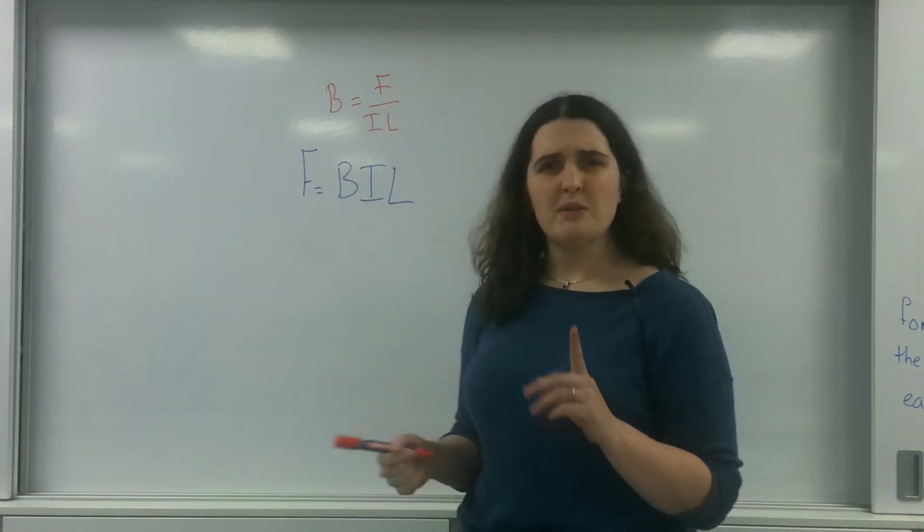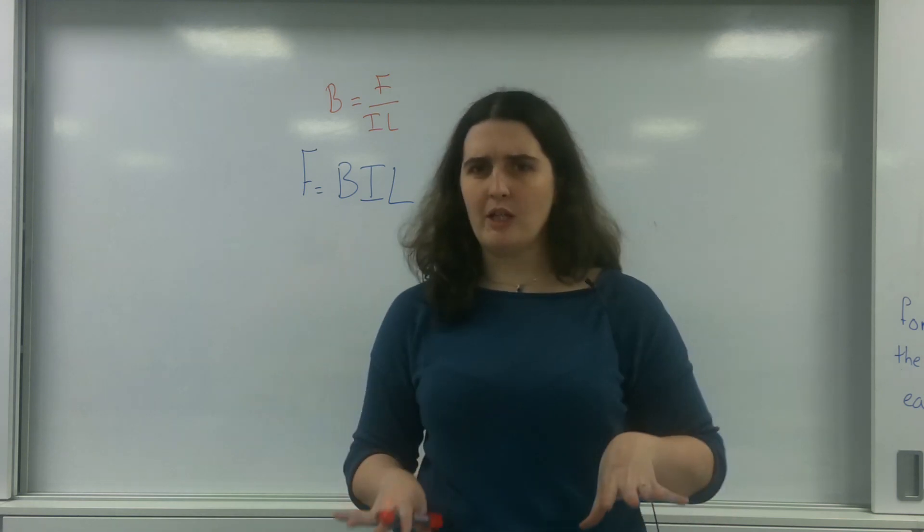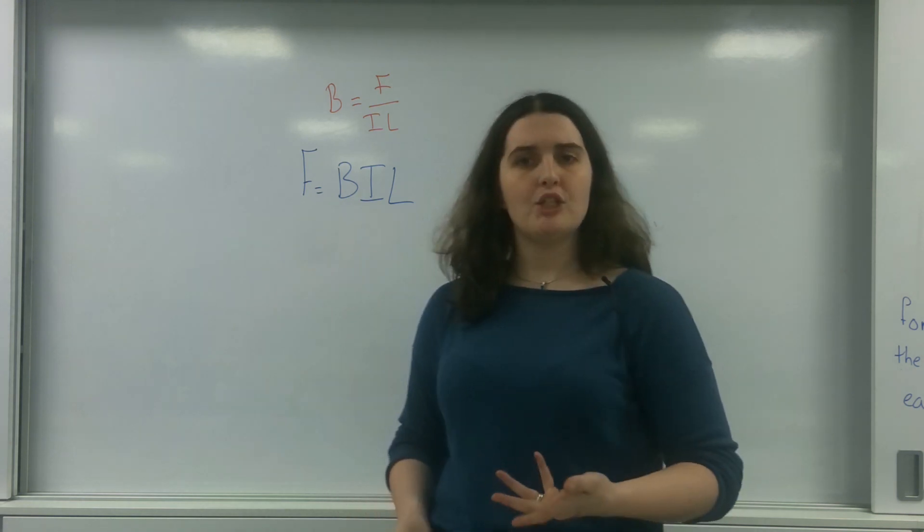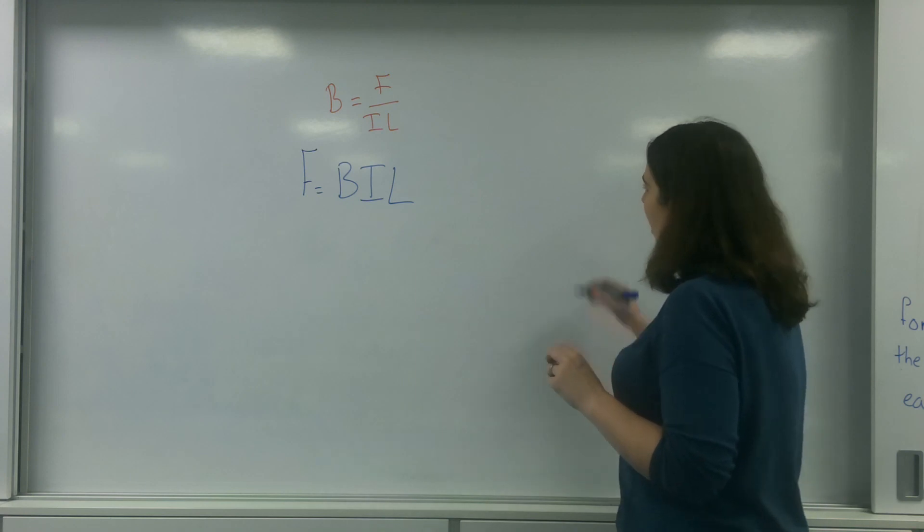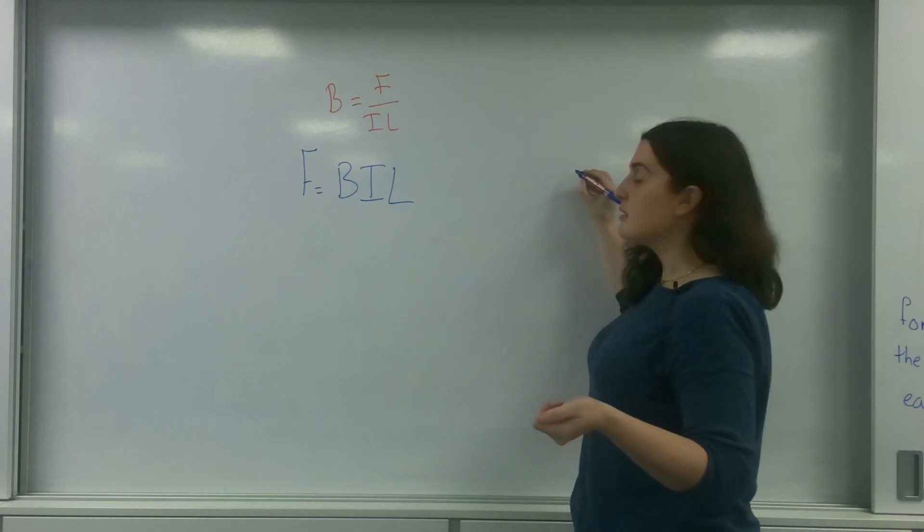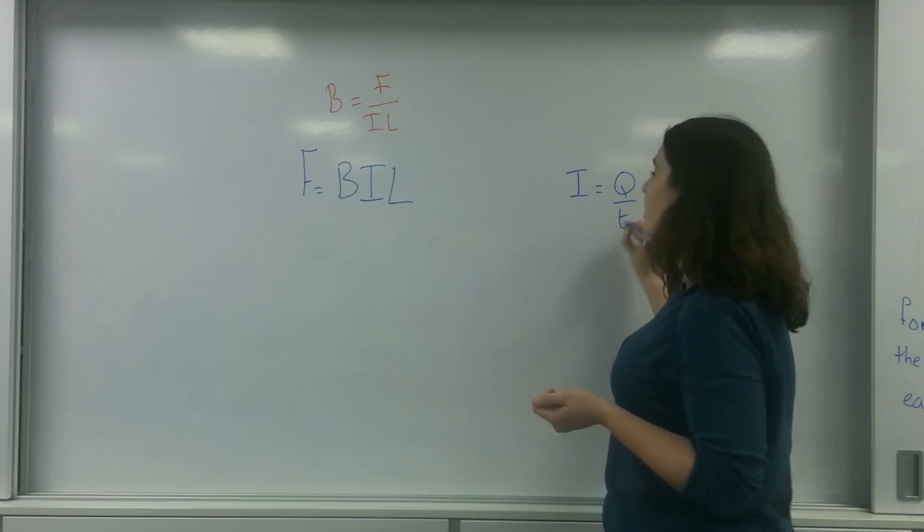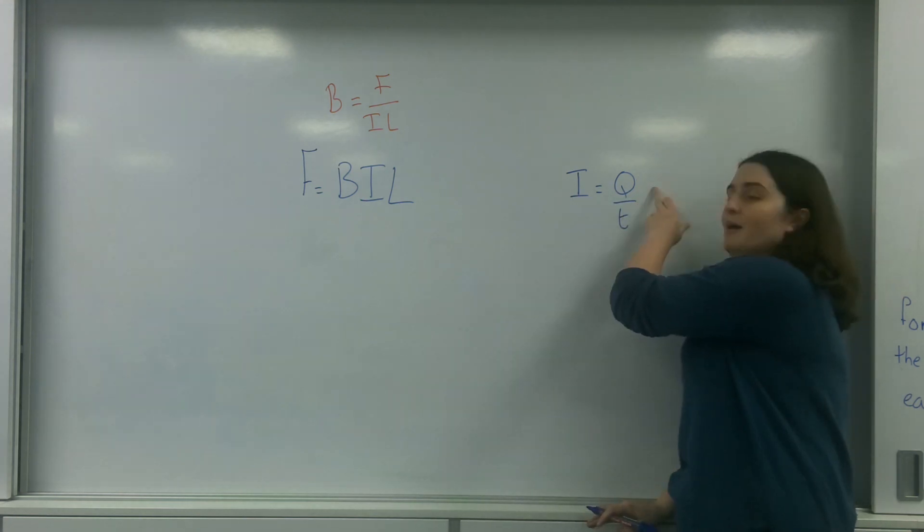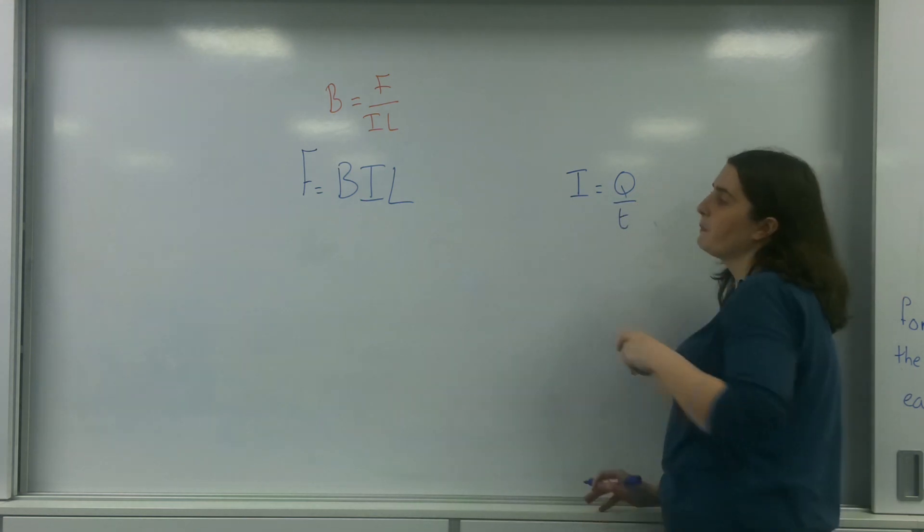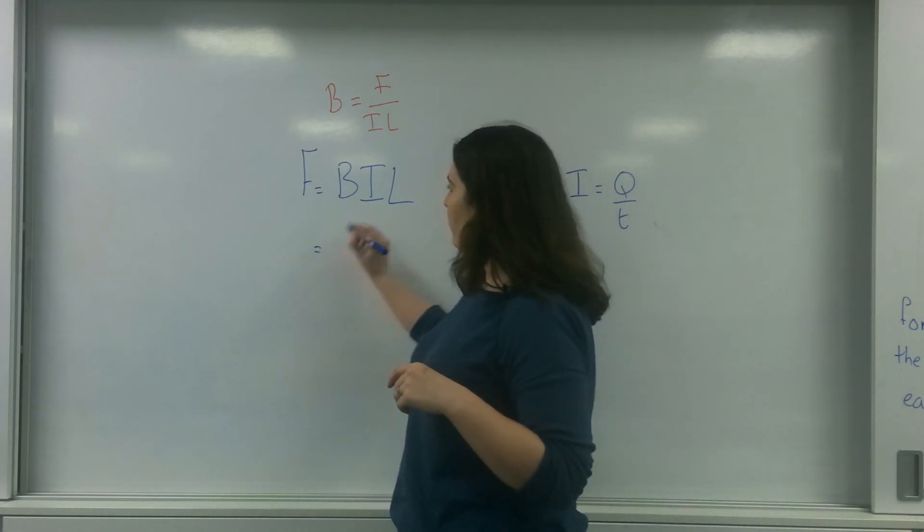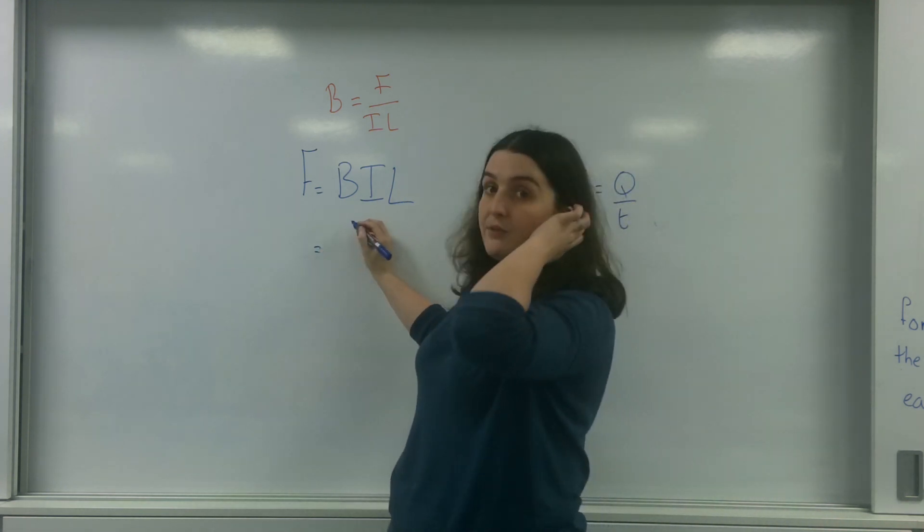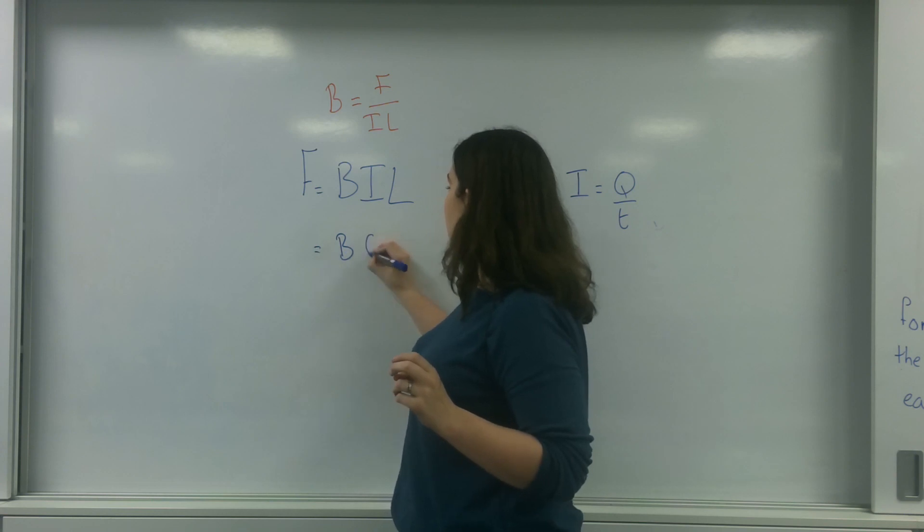Now what I'm going to do is actually fiddle this equation around a bit and give you a new equation. I know that current is the rate of flow of charge, basically how much charge passes in the amount of time. So I'm going to put this equation into this formula. I'm going to end up with B, Q over T, times by L.